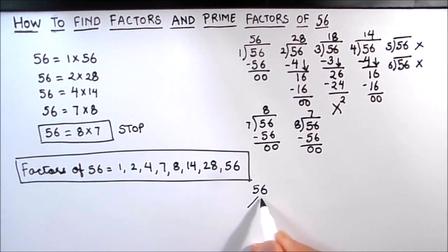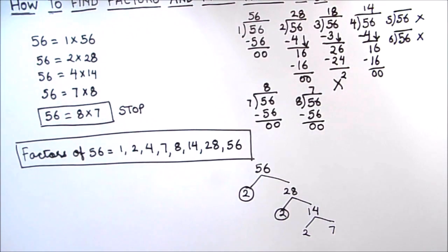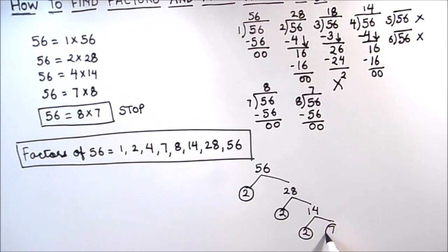14 can be written as 2 times 7. Now we see we got 2 and 7, and 2 and 7 are both prime numbers, so we are going to circle both the numbers. So this completes our factor tree for number 56. All the circled numbers are the prime factors of number 56.